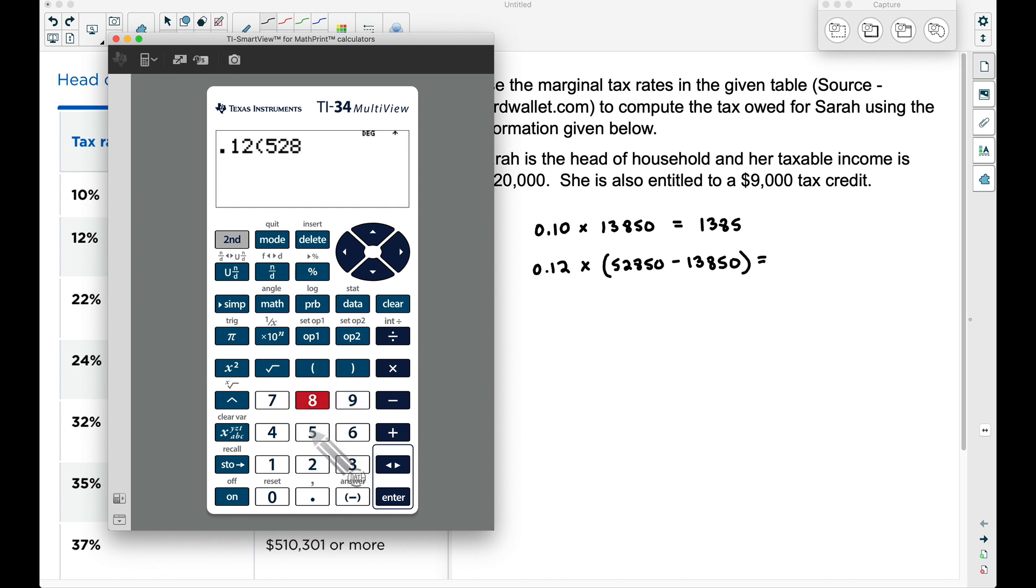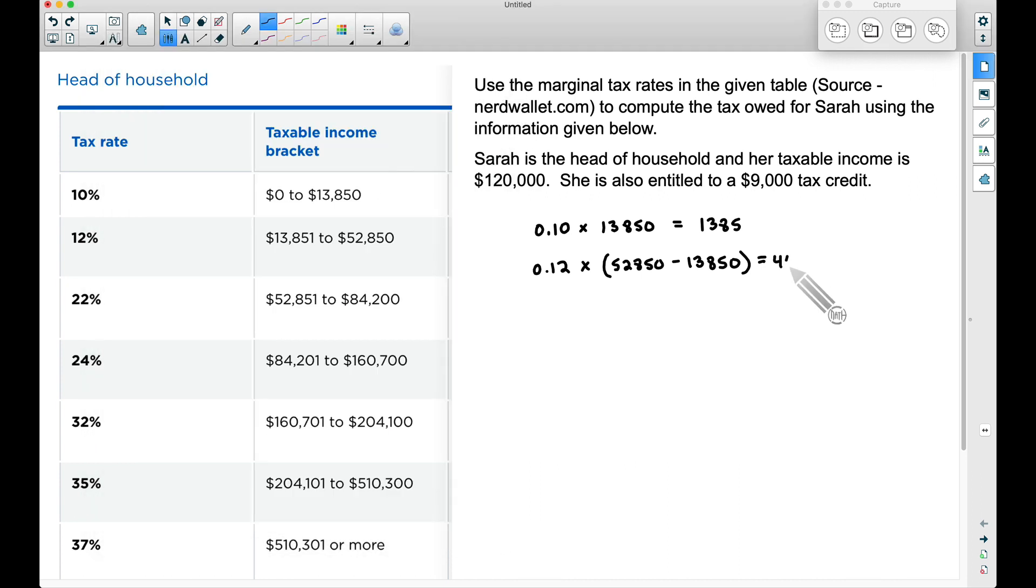Depending on what calculator you have, if you have parentheses, you can type it in something very similar to what you see here. I'm just pretty much typing it in exactly like I see it. We're finding the 12% not of $52,850, but the difference between these two values. And again, that is because we have already found the tax owed on that first $13,850. Finding 12% of this, we get $4,680. So that's going to be the tax owed up to this amount.